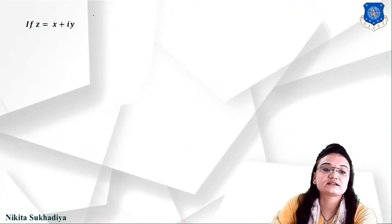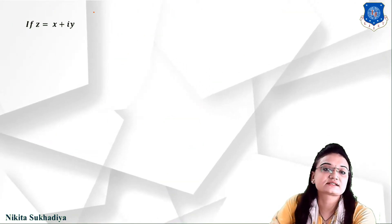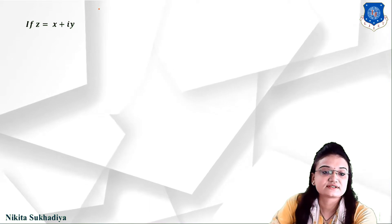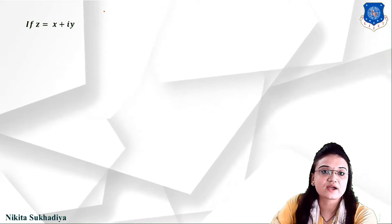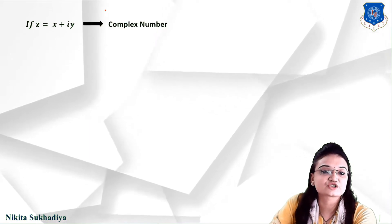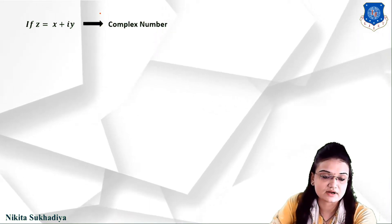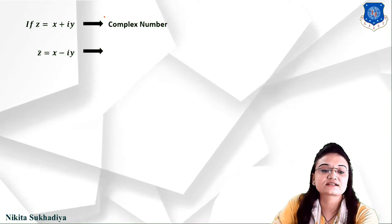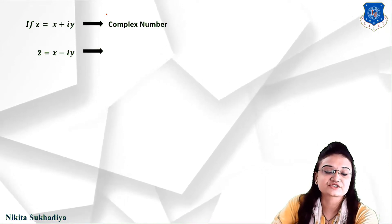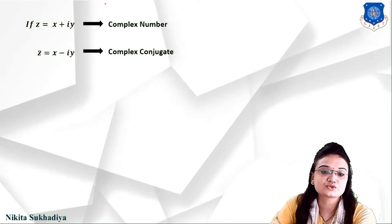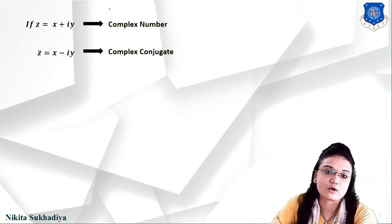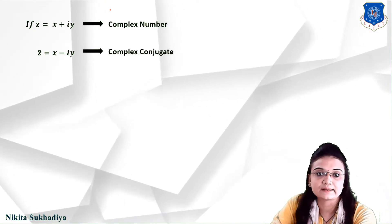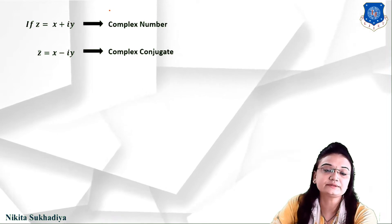If z equals (x, y), that is a complex number, then z-bar equals x minus iy, which is called the conjugate of the complex number.